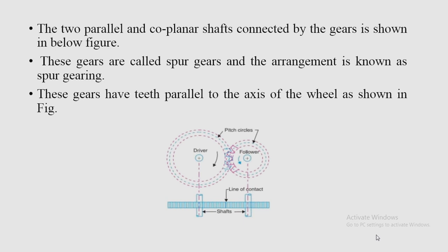In spur gearing, one shaft is named the driver and the other the follower, where the follower follows the motion of the driver shaft. The pitch circles of the two gears are shown in the figure. Spur gears have teeth parallel to the axis of the wheel.